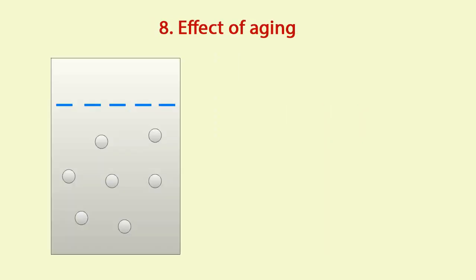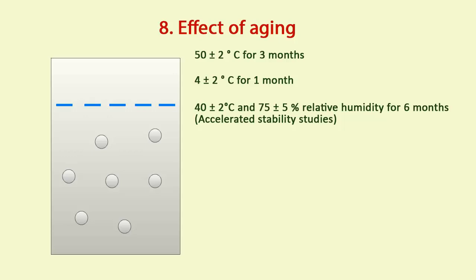Effect of aging. The emulsion is stored at 50 degrees celsius for three months, 4 degrees celsius for one month, 40 plus or minus 2 degrees celsius and 75 plus or minus 5 percent relative humidity for six months. That is accelerated stability studies.